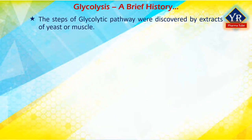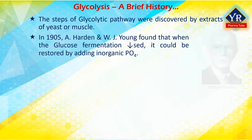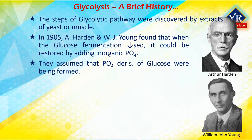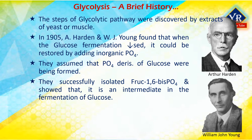Today we recognize that the Zymase of yeast extracts is not a single enzyme, but a mixture of enzymes that together catalyze the reactions of glycolysis. The steps of the glycolytic pathway were gradually discovered by analyzing the reactions catalyzed by extracts of yeast or muscle. In 1905, Arthur Harden and William John Young found that when the rate of glucose fermentation by yeast extract decreased, it could be restored by adding inorganic phosphate. Harden and Young assumed that phosphate derivatives of glucose were being formed, and they succeeded in isolating fructose-1,6-bisphosphate, showing that it is an intermediate in the fermentation of glucose, as it was also fermented by cell-free yeast extracts.